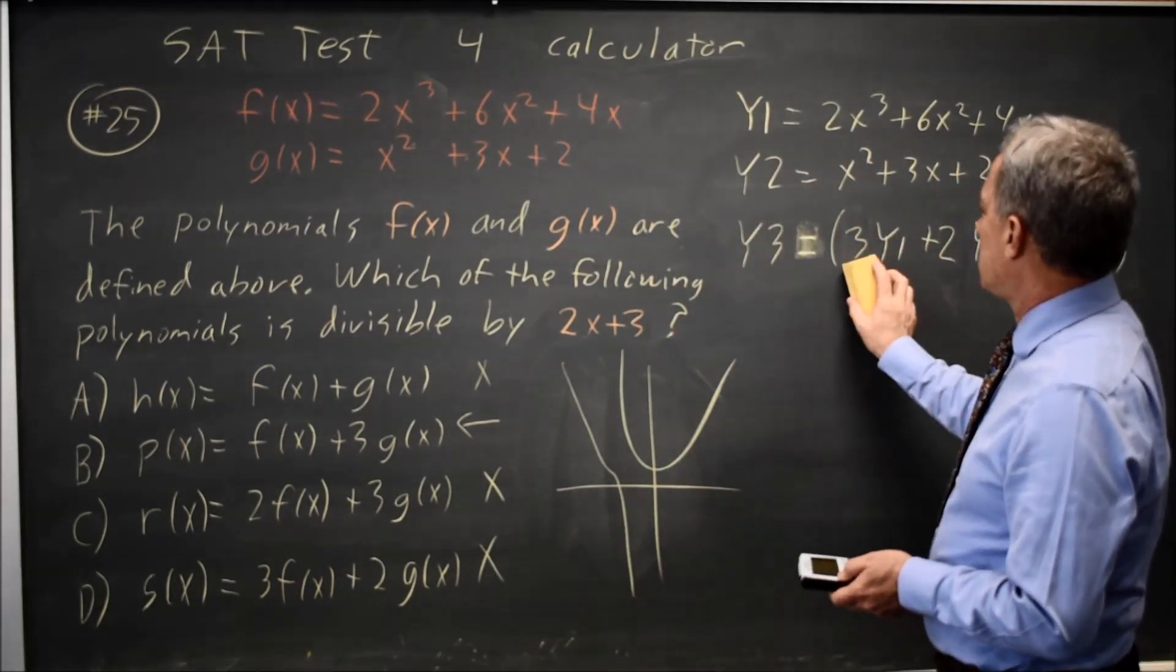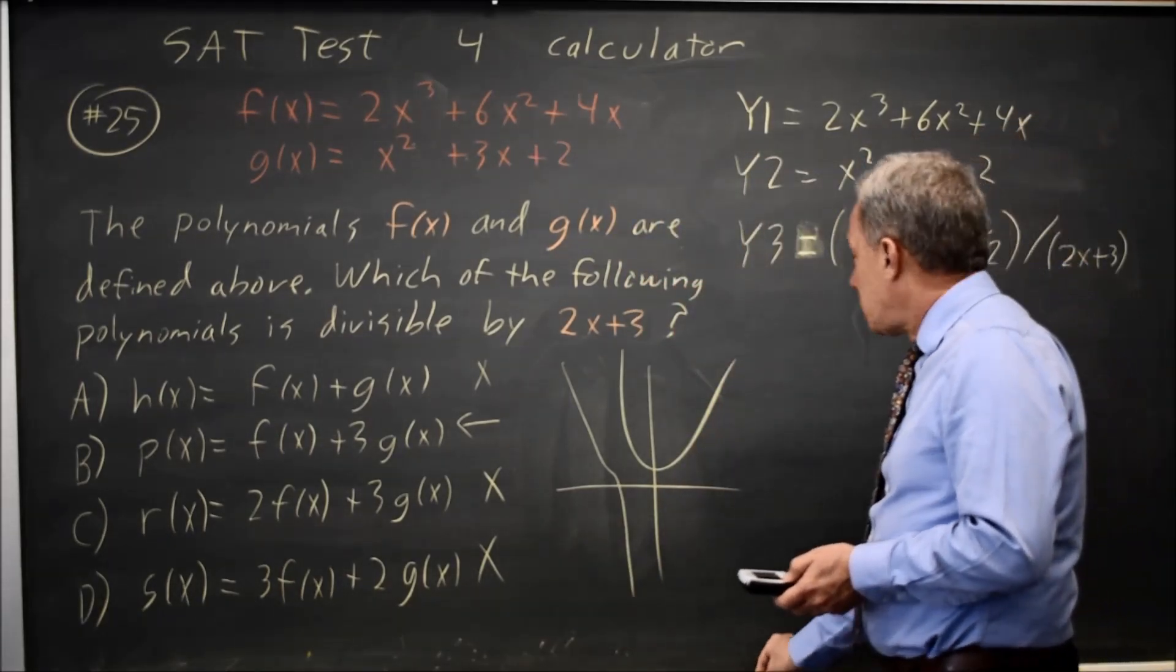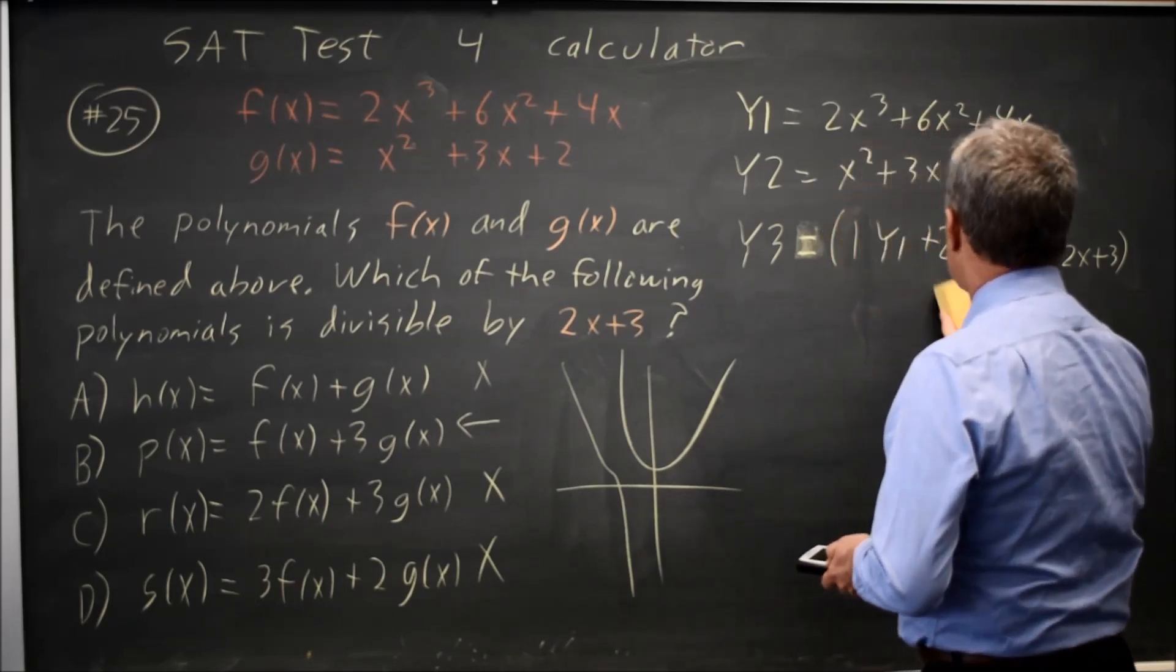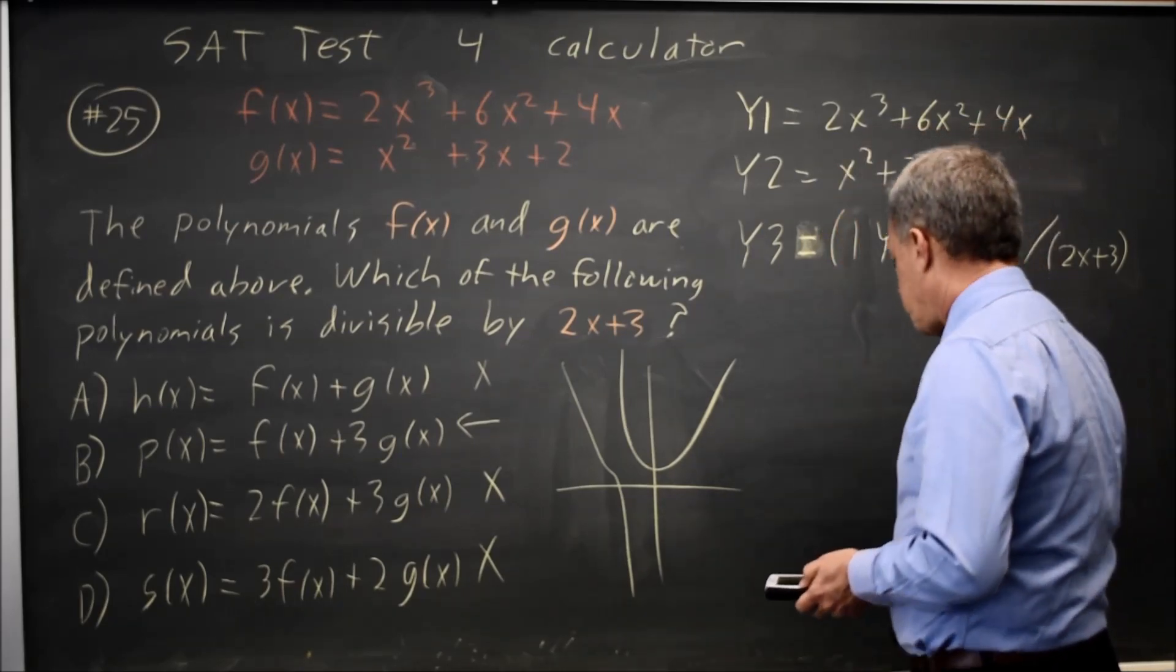If I go back in, and I type a 1 over that 3, and a 3 over this 2, to match choice B,